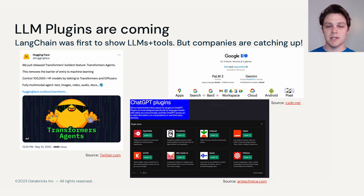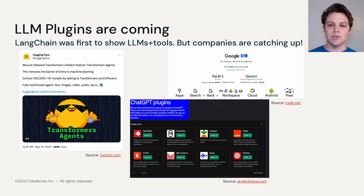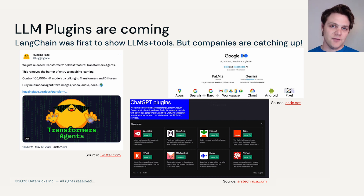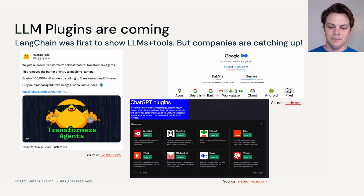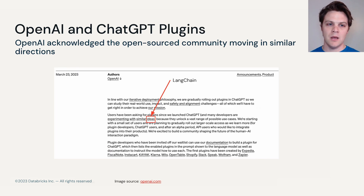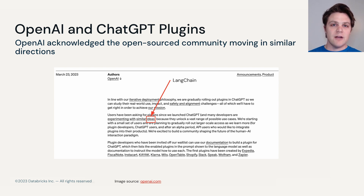HuggingFace just released their Transformers agents a few weeks ago. Google at their IO conference this year showed the integration of Palm2 with their workspace. And ChatGPT is slowly releasing the plugins feature to the public, where we can connect different types of tools to the ChatGPT interface and have it complete really interesting and complex tasks. OpenAI acknowledged the fact that the open source community is moving in a very similar direction and even referenced LangChain in their documentation when they discussed plugins.